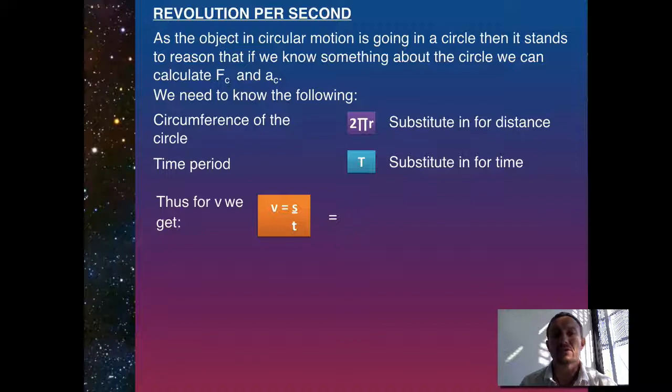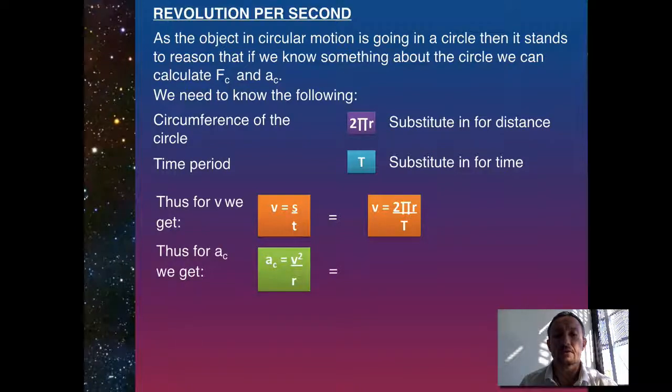So instead of distance over time, what we then end up with is 2 pi R over T. Now, we also know that we've got centripetal acceleration, which is V squared over R. So now we can substitute into V, 2 pi R over T squared, and that will all be placed over R. So as a result, rearranging,